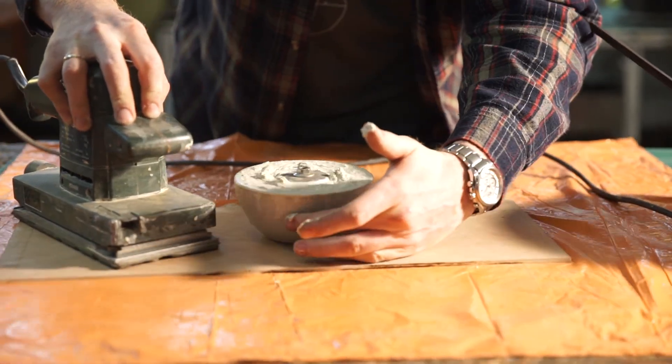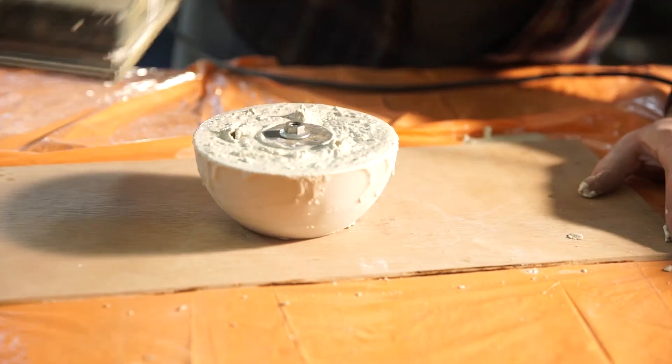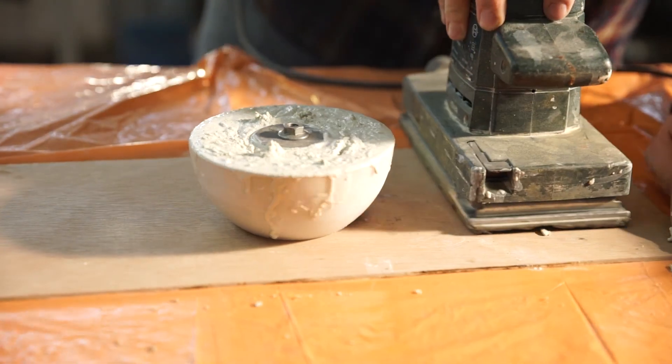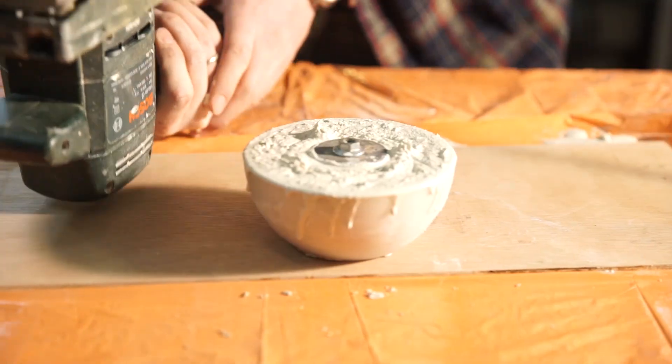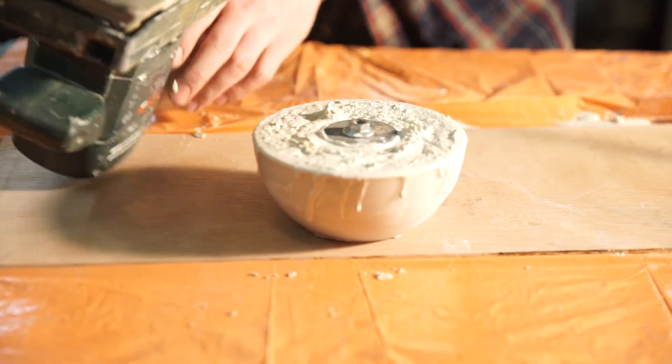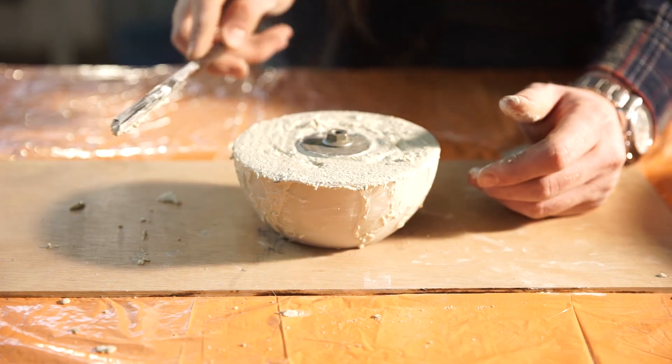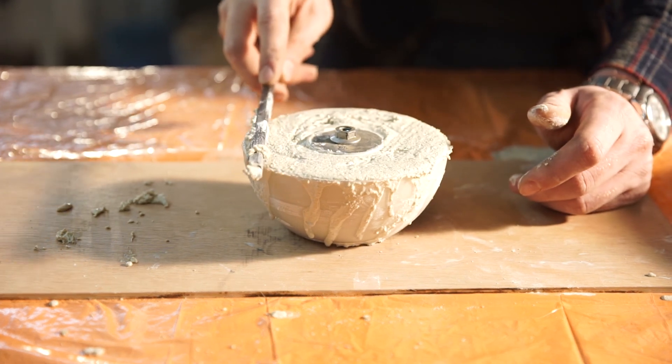I noticed that the mold started rotating counterclockwise when vibrated. It seems that no matter what I try, I can't seem to make it rotate clockwise. I'll have to look deeper into this one. If you have any ideas, feel free to comment. I leveled the top part with a straight edge, and now this needs to cure for 24 hours.